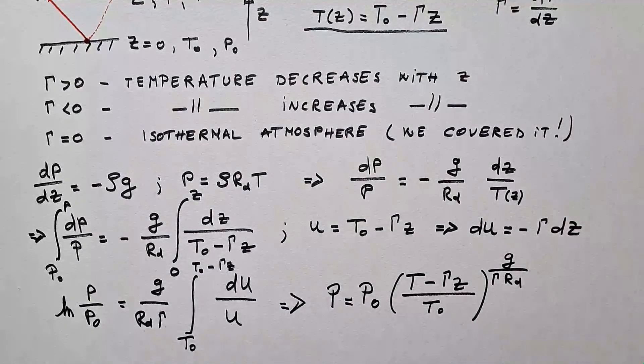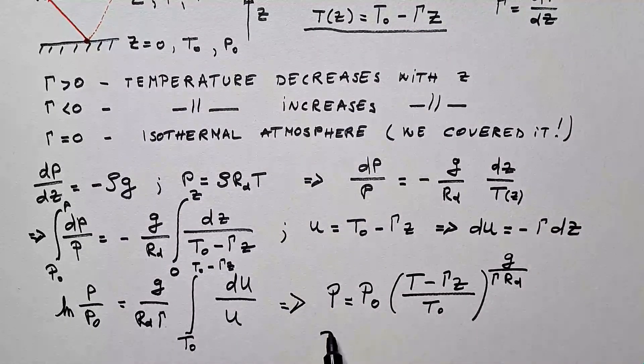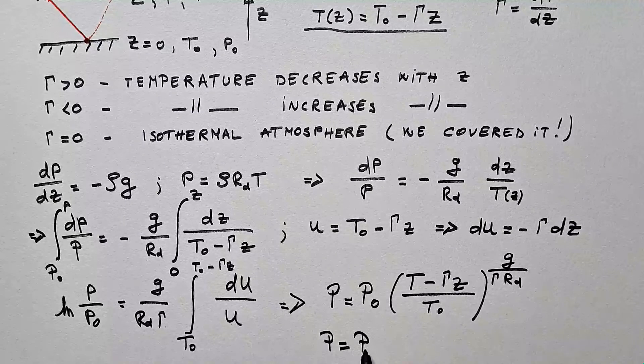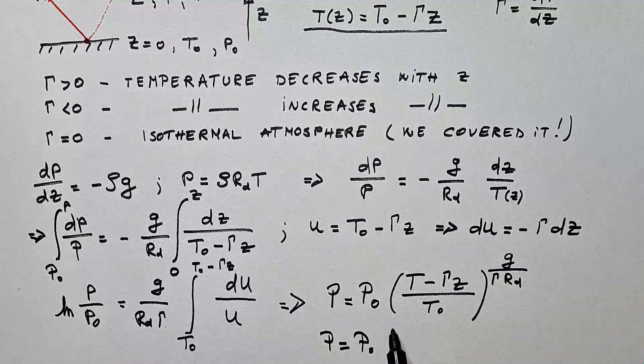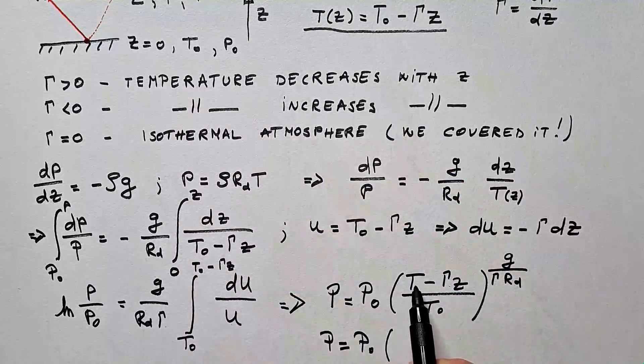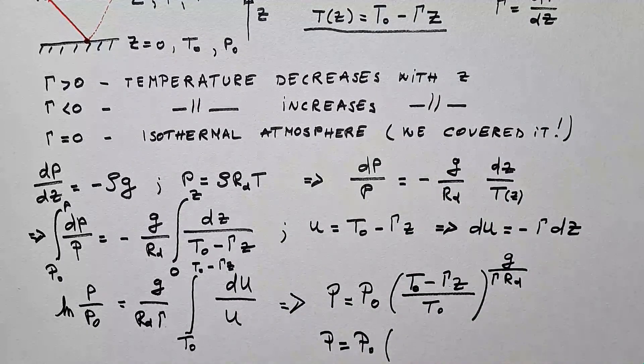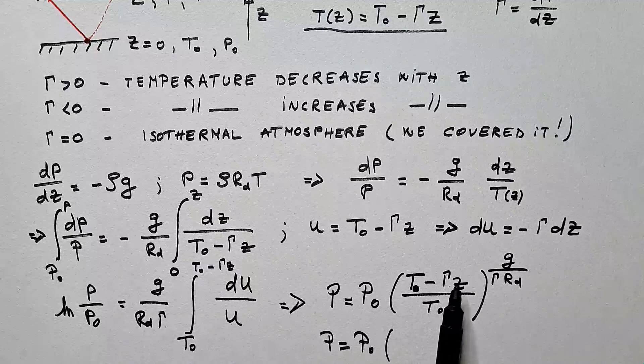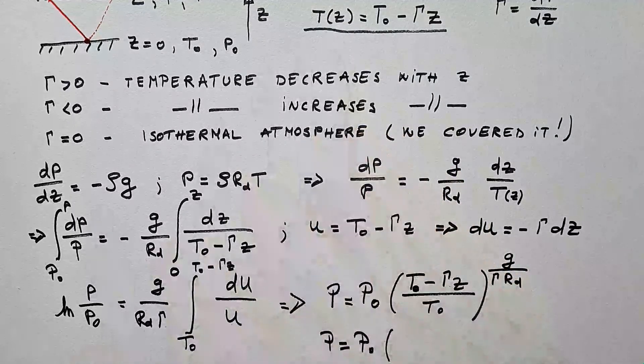Of course, we can further simplify this by saying that P is equal P₀. Notice that T₀ minus γz, oh sorry, here is T₀. T₀ minus γz is simply T of z